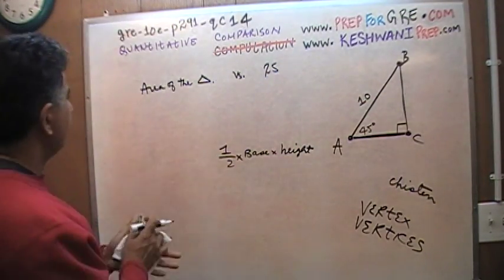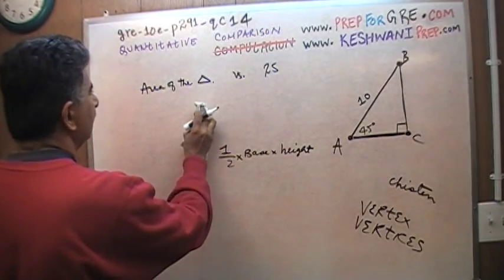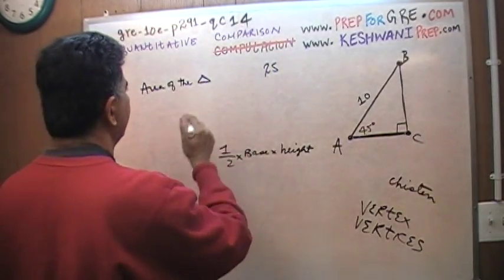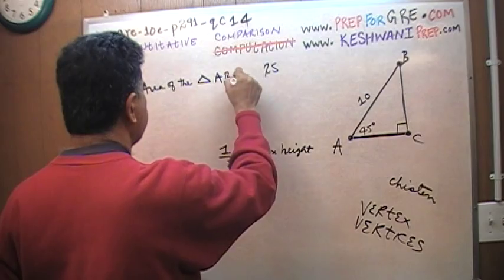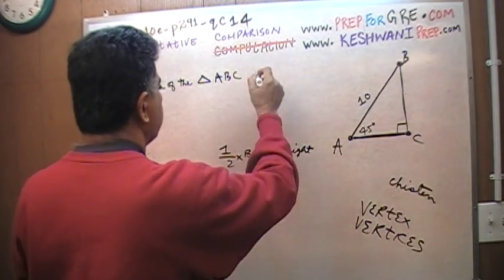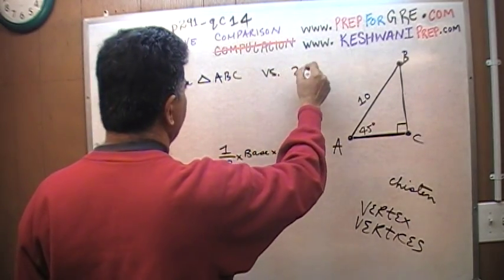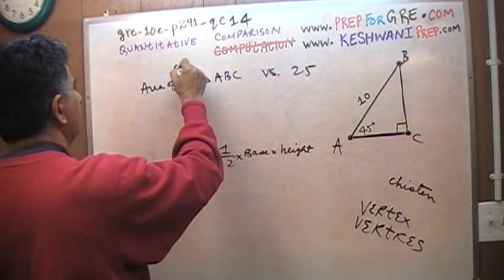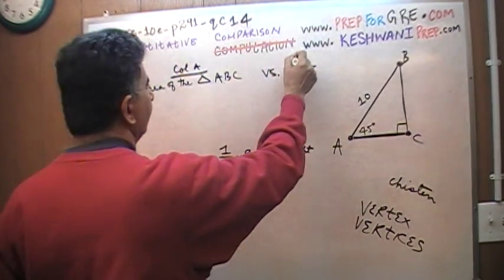So here, we have to find the area of the triangle, area of the triangle ABC, versus 25. This is your column A, and this is your column B.